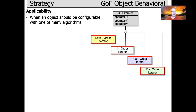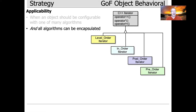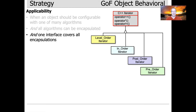When should you apply a strategy pattern? You should apply it when an object should be configurable with one of many algorithms. In our case, we're going to have code that needs to traverse our expression tree in different ways. All the algorithms can be encapsulated — bundled up into classes and objects that have interfaces defined on them, APIs. We can have one interface or one API cover all the encapsulations. The interface we're going to use is the C++ STL iterator interface, and we'll use that to embody all the different traversal strategies needed to go through the expression tree in different ways.